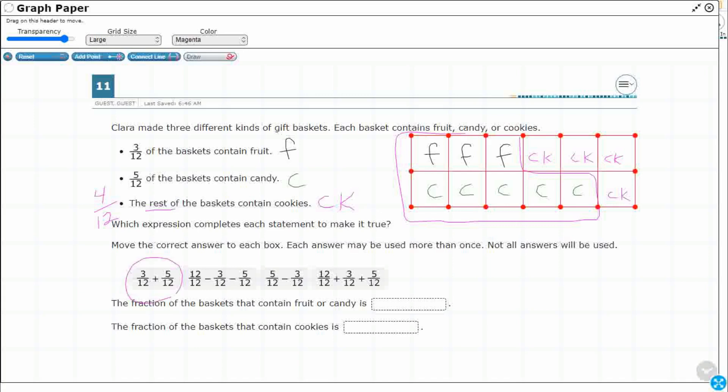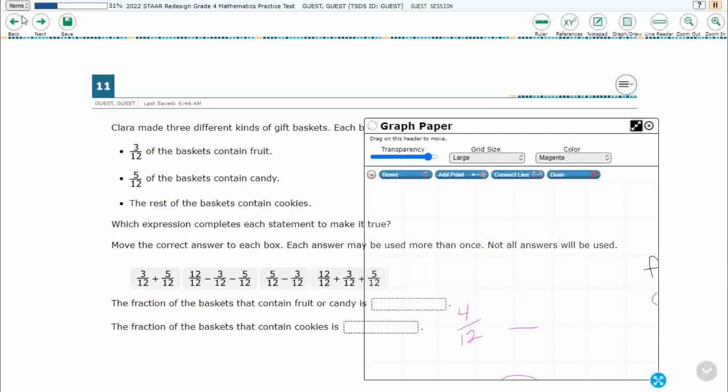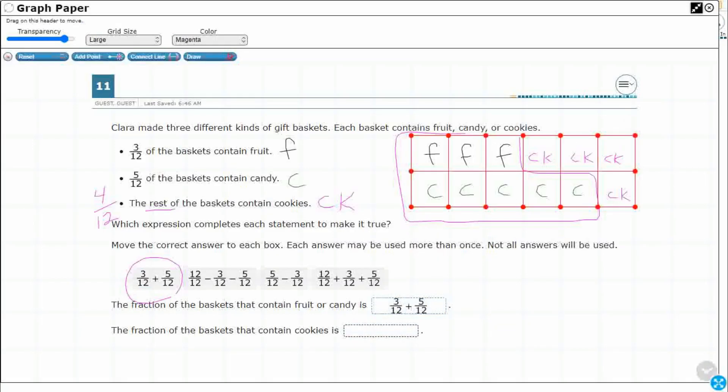So it's going to be this one. I'm just going to minimize that and move that to the correct answer. There we go. Three 12ths plus five 12ths. This is a two point problem, so you can get one right and one wrong, but if you want to get both answers correct for two points, we got to do that.